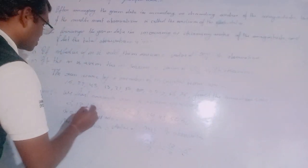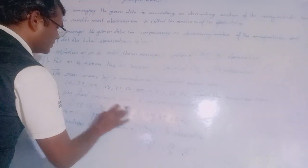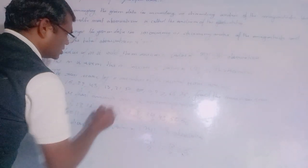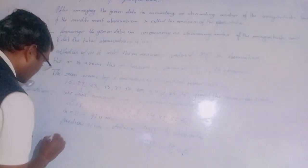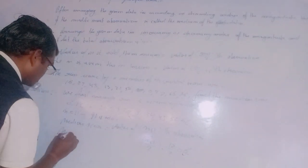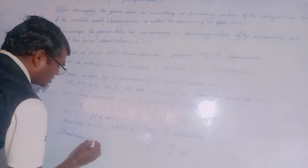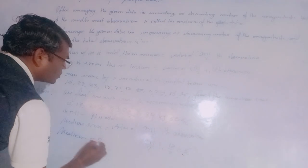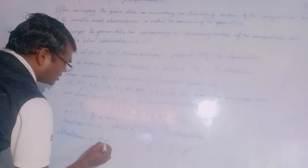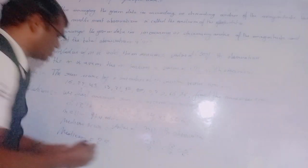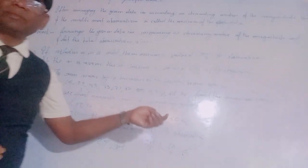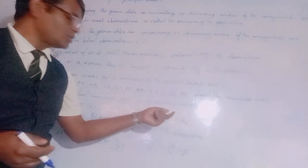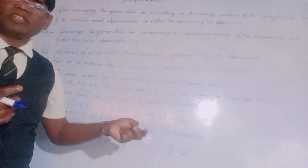Counting the 6th position: 1, 2, 3, 4, 5, 6 — the 6th value is 29. So the median score is equal to 29.